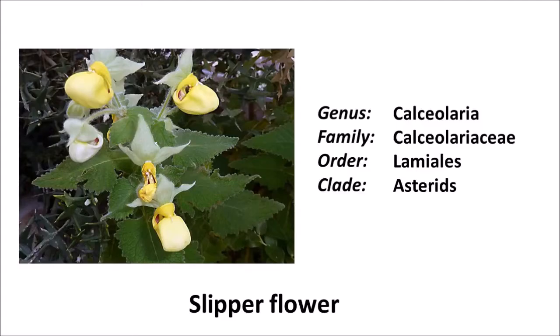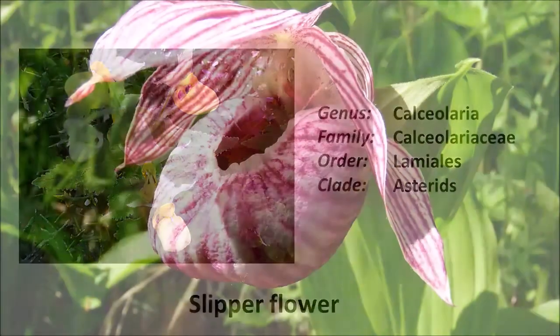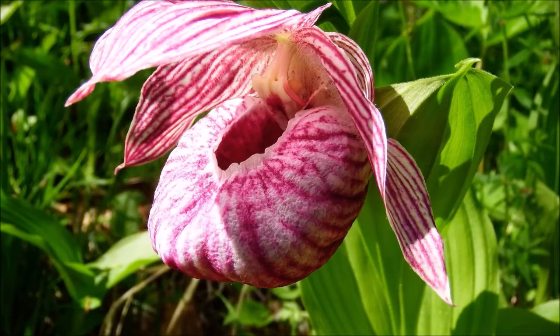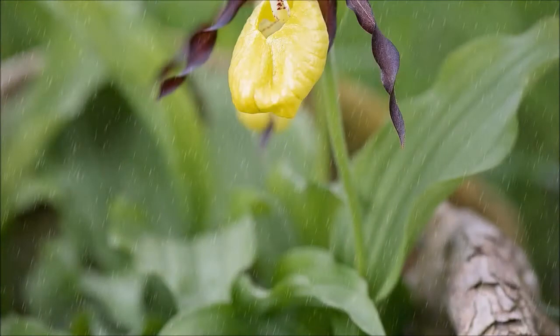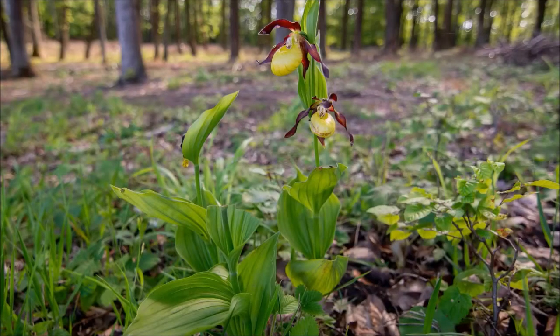Slipper flowers, scientifically called Calceolaria integrifolia, are a genus of the plant family Calceolariaceae. They are in the order Lamiales. The plant originates from central and south America, where it grows in mountainous regions. At present, some cultivated species are known, which are very popular as balcony and house plants, also on flower beds as ornamental plants. The leaves of the plant are fleshy and slightly hairy; in terms of shape they are ovate, oval, and elongated.